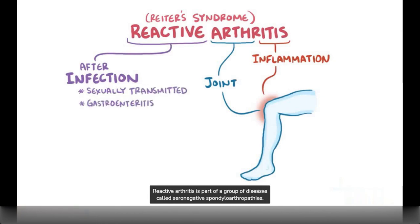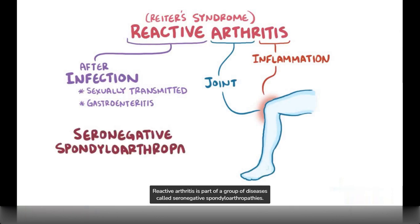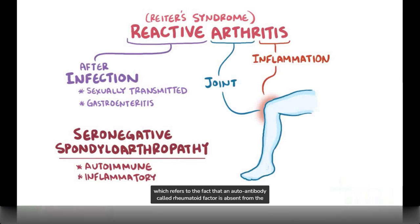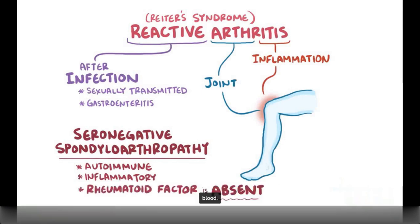Reactive arthritis is part of a group of diseases called seronegative spondyloarthropathies. Spondyloarthropathies are autoimmune, inflammatory joint diseases, and they're seronegative, which refers to the fact that an autoantibody called rheumatoid factor is absent from the blood.